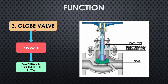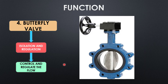The third valve is the globe valve, which is used for regulation — controlling the flow. Controlling the flow means you can manage the volume passing through the valve. Looking at the diagram, the flow enters, passes through the seat of the valve, and exits. The globe valve gives full control over flow volume based on how much the valve is opened.